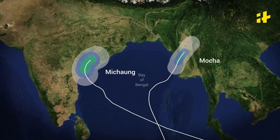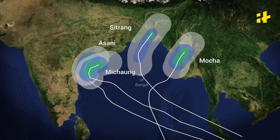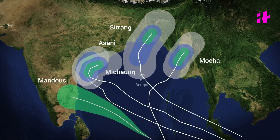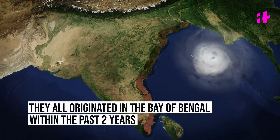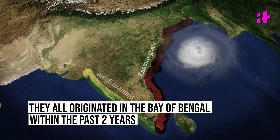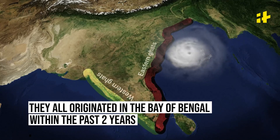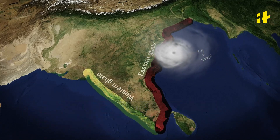Michong, Moka, Asani, Sitrang, and Doze. All these cyclones have one thing in common — they all originated in the Bay of Bengal within the past two years, causing havoc.